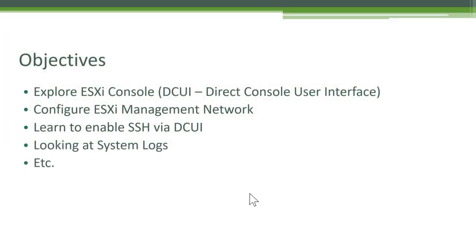We'll take a look at the ESXi console — a lot of people refer to it simply as the console, though some documentation calls it DCUI, which stands for Direct Console User Interface. We'll look at how to configure the management network, which is the IP address assigned to the ESXi host for day-to-day management like reachability, SSH, or adding this host to vCenter. We'll also learn how to enable SSH directly from the console interface and view system logs.